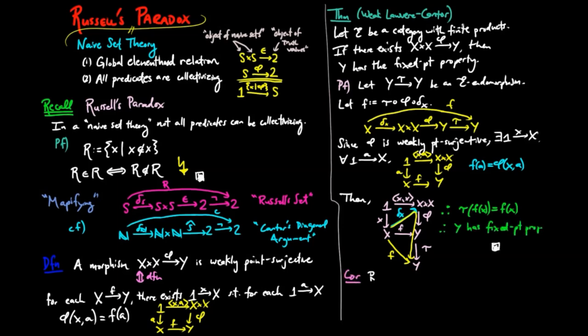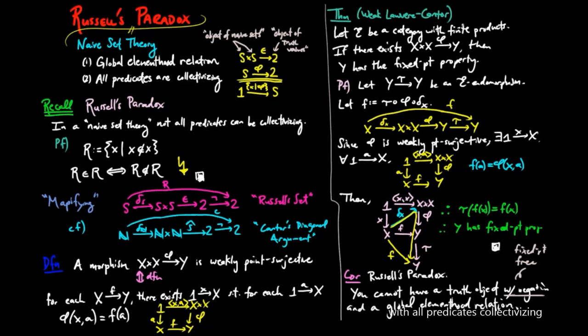Then as a corollary we have Russell's paradox. You cannot have a naive set theory with a truth object with negation, meaning that the theory is consistent, there exists two points true and false, and a global element hood relation in which all predicates are collectivizing. And the proof is just the application of the contrapositive of the theorem above.